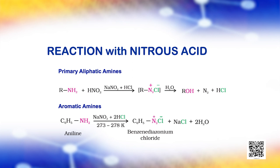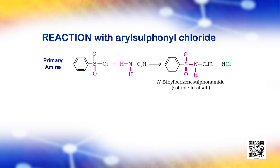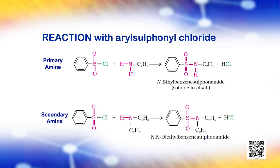Secondary and tertiary amines react with nitrous acid in a different manner. Benzene sulfonyl chloride (C6H5SO2Cl), also known as Hinsberg's reagent, reacts with primary and secondary amines to form sulfonamides. The reaction of benzene sulfonyl chloride with primary amines yields N-ethylbenzene sulfonamide. In the reaction with a secondary amine, N,N-diethylbenzene sulfonamide is formed.